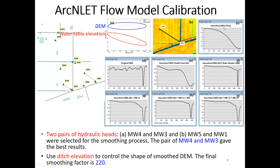We use the ditches, especially the main canal, to control the water level and smooth the shape of the DEM. We applied a smoothing factor of 40 initially, then added water table elevation and smoothed again repeatedly. After this whole process, the final smoothing factor was 220 — much larger than what we used for, say, Alligator Heights in Jacksonville. The reason is that Indian River County in central Florida has very smooth topography.